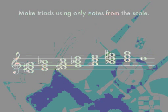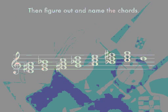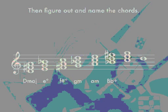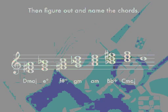Now that we've constructed the chords, we figure out what they are. D, F sharp, A is a D major chord. E, G, B flat is an E diminished chord. F sharp, A, C is an F sharp diminished. G, B flat, D is G minor. A, C, E is A minor. B flat, D, F sharp is a B flat augmented chord. And lastly, C, E, G is a C major chord. These are the scale degree chords in this mode — quite different sounding than they would be in the major scale.